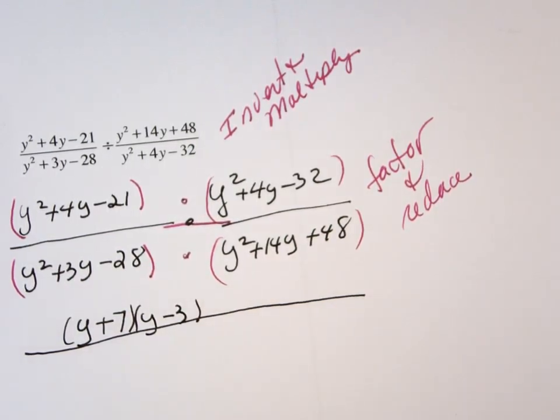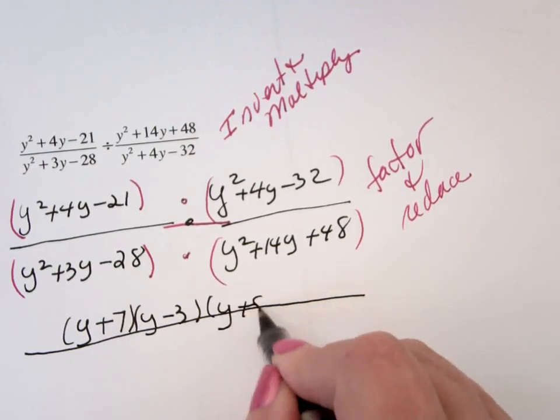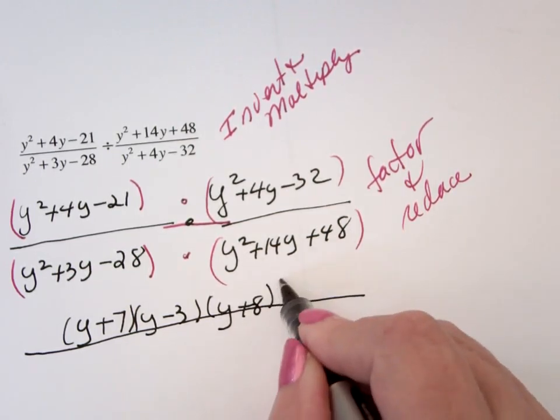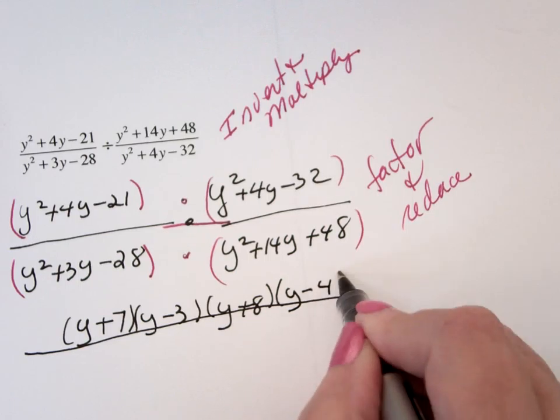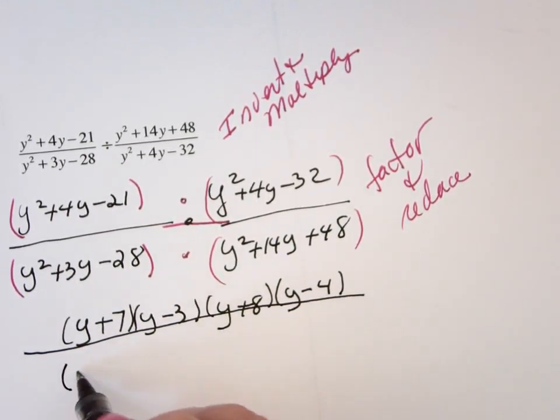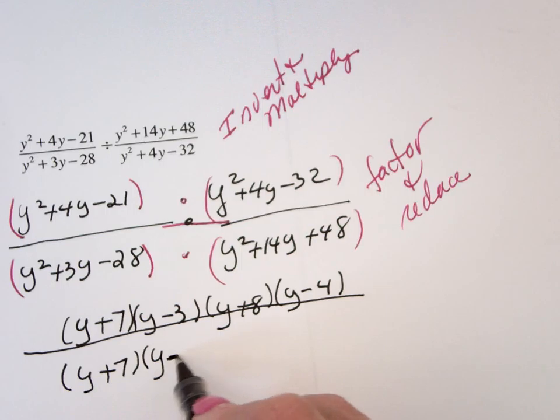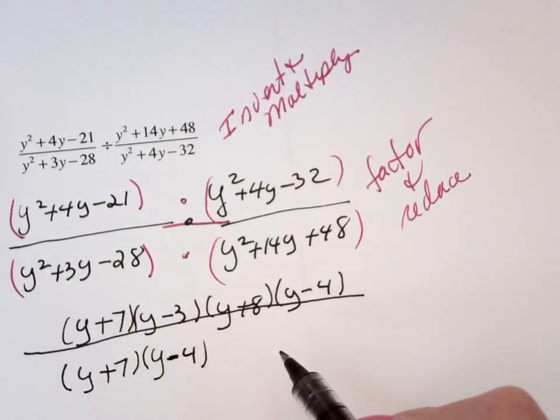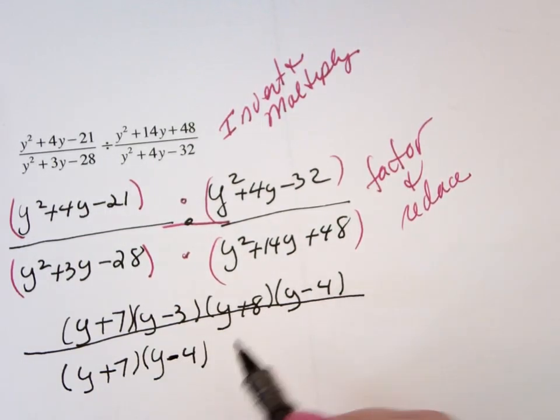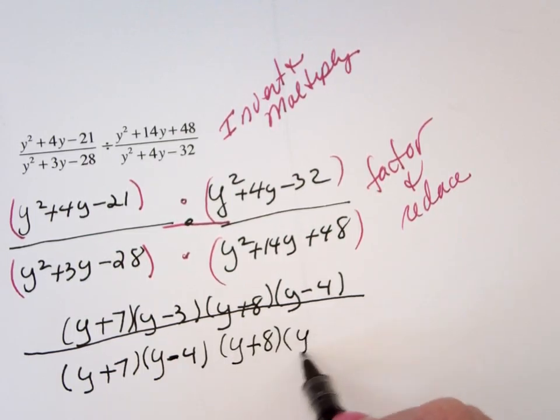Y squared plus 4y minus 32 is going to be a y plus 8y minus 4. Y squared plus 3y minus 28 is going to be a y plus 7 and a y minus 4. Y squared plus 14y plus 48 is a y plus 8 and a y plus 6.